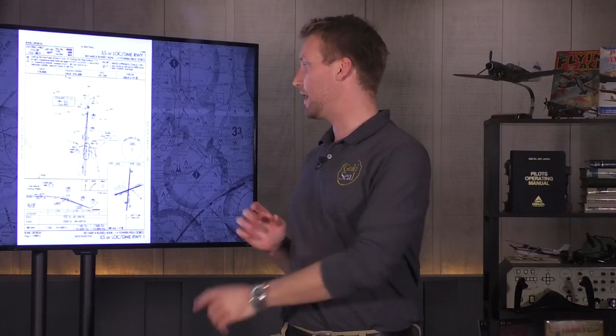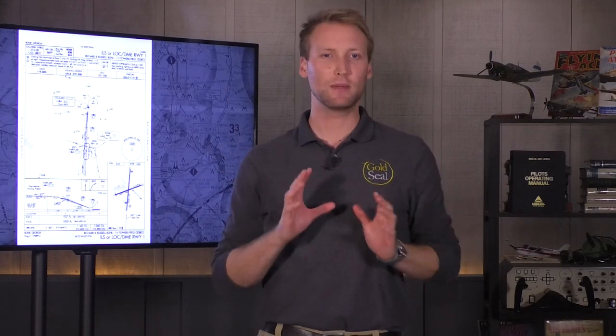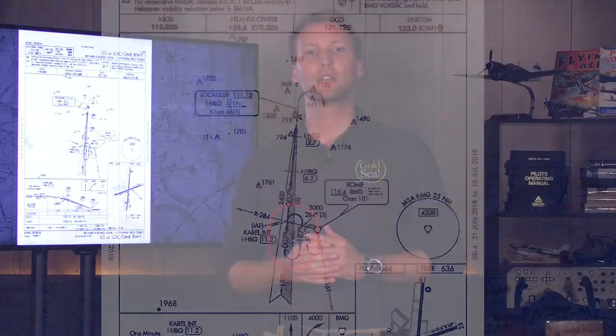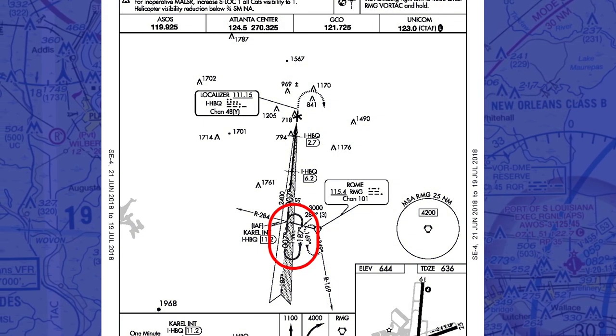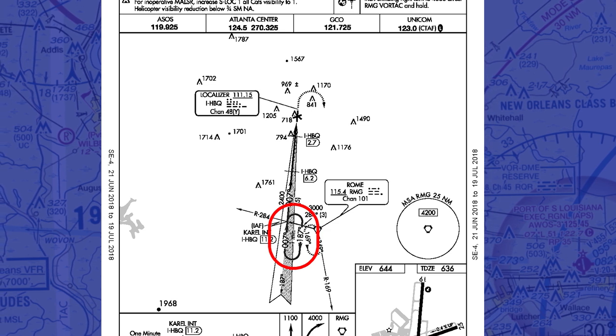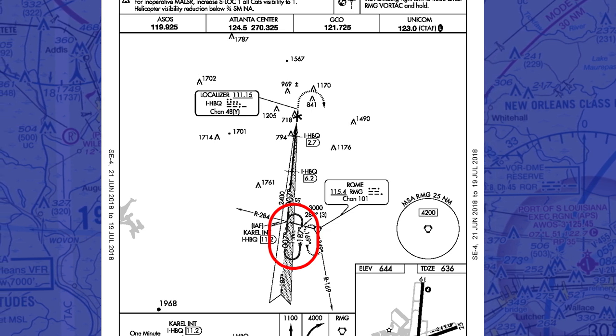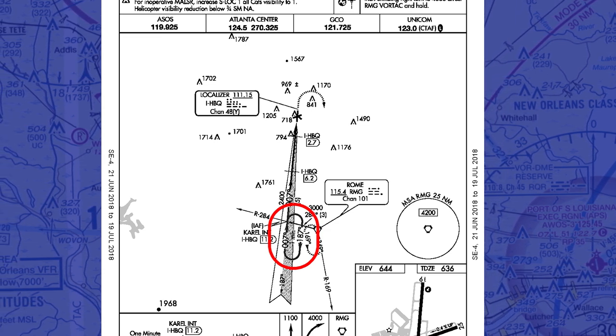Another course reversal method would be a holding pattern like this. The only difference with the holding pattern and the published procedure turn is the ability to complete more than one lap should you need to lose more altitude.